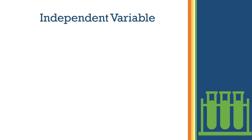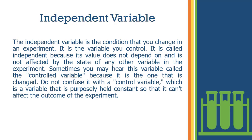What is the independent variable? The independent variable is the condition that you change in an experiment — it is the variable you control. It is called independent because its value does not depend on and is not affected by the state of any other variable in the experiment. Sometimes this variable is called the control variable because it is the one that is changed, but do not confuse it with the controlling variable, which is a variable that is purposely held constant so that it cannot affect the outcome of the experiment.